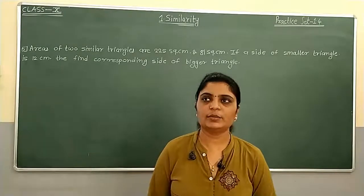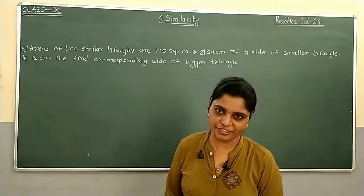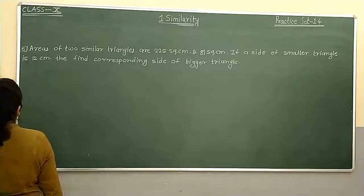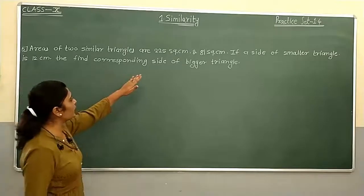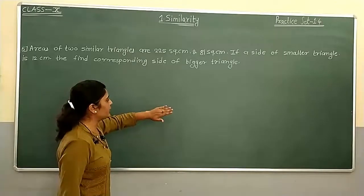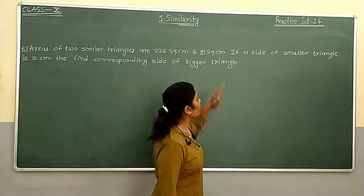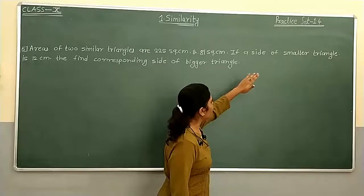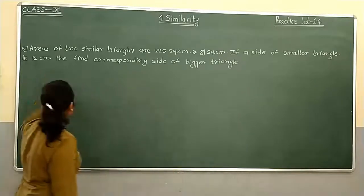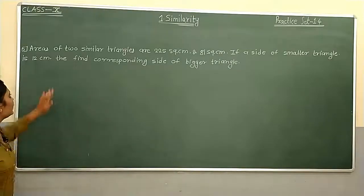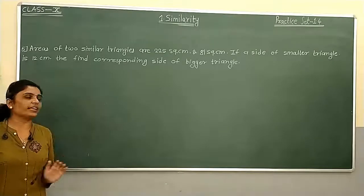Hello dear students, now we will solve sum number 5. Areas of two similar triangles are 225 square cm and 81 square cm. If a side of the smaller triangle is 12 cm, then find the corresponding side of the bigger triangle.